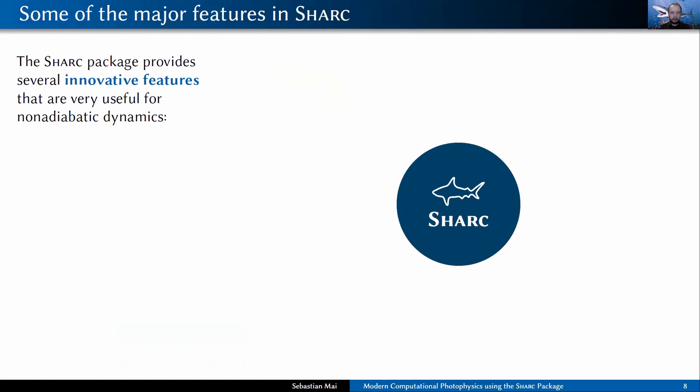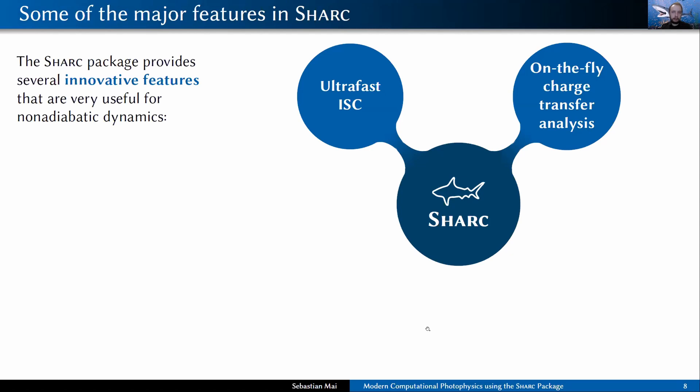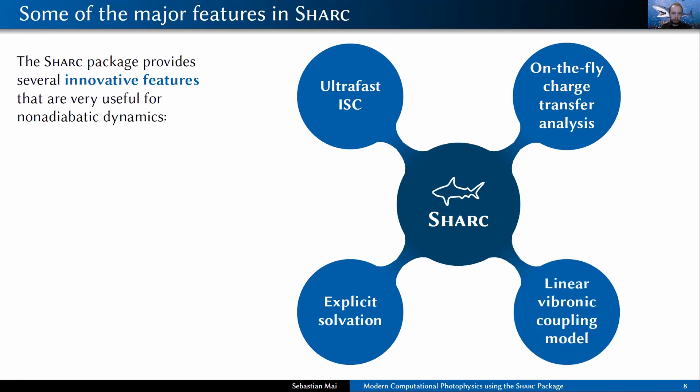The SHARC package now is already developed for quite some time. We have developed a couple of useful features that go beyond the simple surface hopping itself. Examples of these features are, one of the core things of SHARC is of course this ultrafast intersystem crossing. But there are also things like on the flight charge transfer analysis where we employ the Theodore package of Felix Blasser. We have now different ways of including explicit solvation through QM/MM methods. We also implemented an analytical model which is based on linear vibronic coupling Hamiltonians that can be quickly parametrized and then allow for extremely fast dynamics.